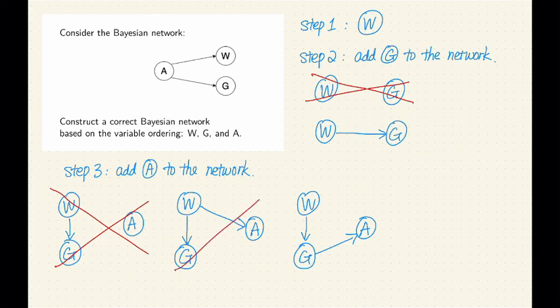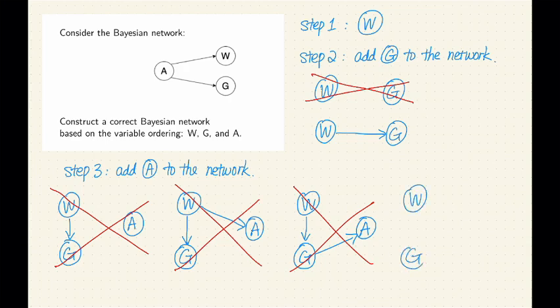Similarly, given G, A and W are not independent either. If we know the value of G, A and W are still directly connected, so they still directly influence each other. Unfortunately, we cannot choose a parent set of size one as well. The only remaining possibility is that we have to choose both W and G to be parents of A.